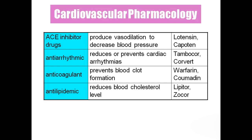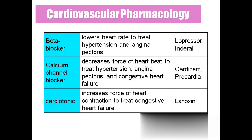Beta blockers lower the heart rate and are usually given for hypertension and angina pectoris. Calcium channel blockers decrease the force of heartbeat and decrease blood pressure, and are given particularly for congestive heart failure and angina pectoris.